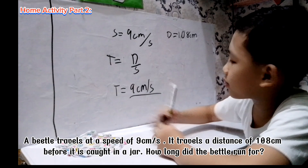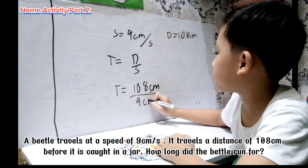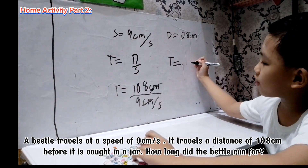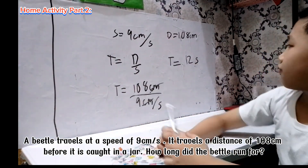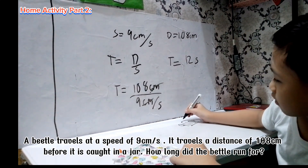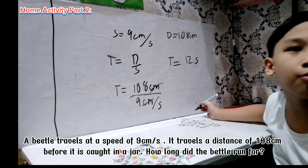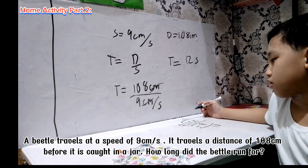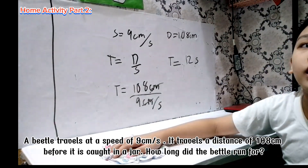Let's substitute our given: 108 cm divided by 9 cm per second. Cancel the units. 108 divided by 9: 10 divided by 9 gives 1 remainder 1, then 18 divided by 9 gives 2. The answer is 12 seconds. The beetle ran for 12 seconds before it was caught.